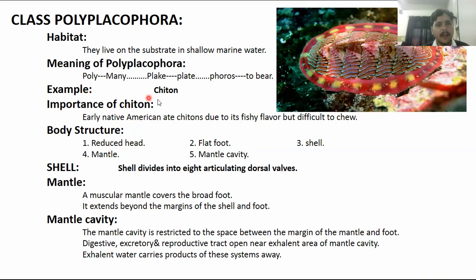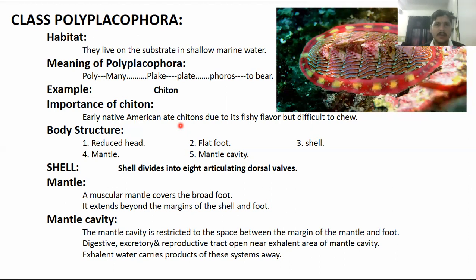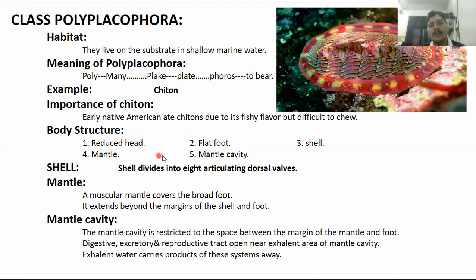An example is chiton. These are the early Native Americans basically. Now they have a fishy flavor, used as a feeding habit. The body structure has a reduced head, flat foot, shell present, mantle, and mantle cavity.